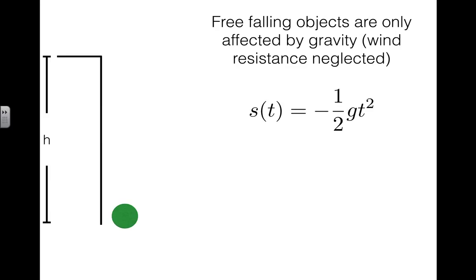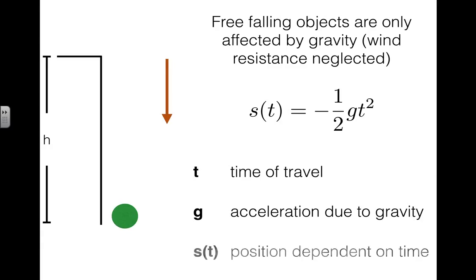So the position of the ball at any time t falling directly down from the roof of the building is given by minus one-half gt squared. This is where t is the time of travel, g is the acceleration due to gravity and it's negative because it's down, and s(t) as we mentioned before is position and it's dependent upon how much time the ball has been falling.